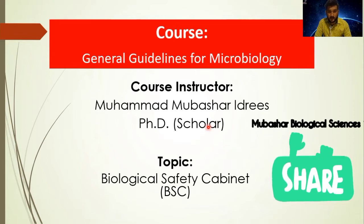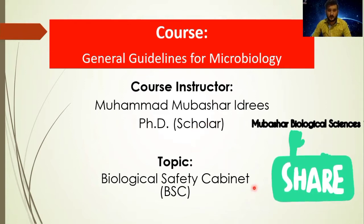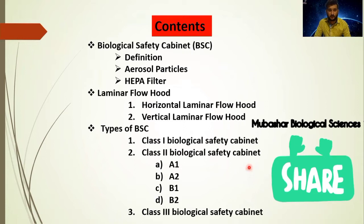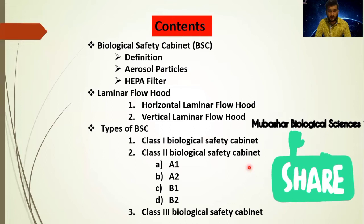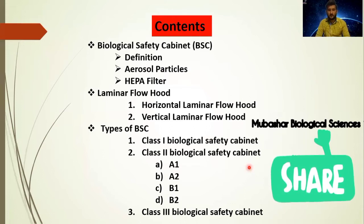Biological safety cabinet is very important for medical lab professionals, medical lab technologists, biomedical engineers, and also for infectious control. In this lecture we will see the biological safety cabinets and its types like laminar flow hood and biological safety cabinets. Biological safety cabinets are divided into three classes: class 1, class 2, and class 3. Class 2 biological safety cabinets are further divided into four sub-classes: A1, A2, B1, and B2.